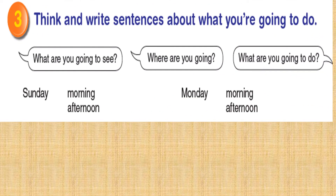Exercise 3: Think and write sentences about what you are going to do. What are you going to see? Where are you going? What are you going to do? Sunday morning, afternoon, Monday morning, afternoon. For example: I am going to see Omar on Sunday morning. I am going to go to the moon on Monday afternoon. Try to write five sentences.